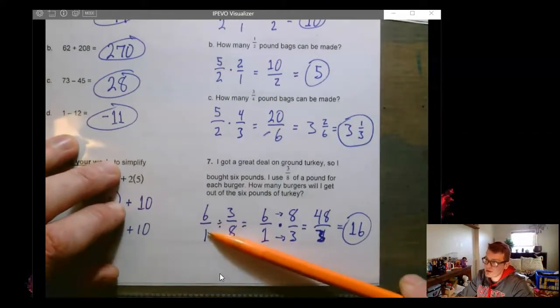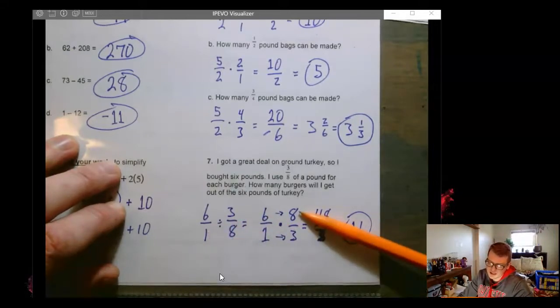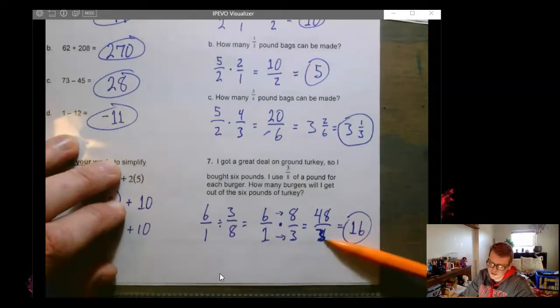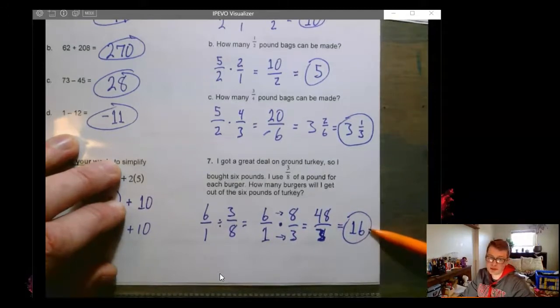Divided by three eighths becomes six times eight thirds. So six times eight across the numerator, one times three across the denominator. We get 48 over three, which actually reduces to a perfect 16 burgers that we could make.